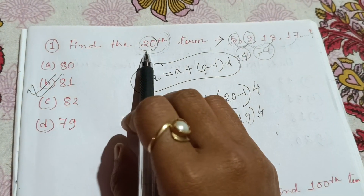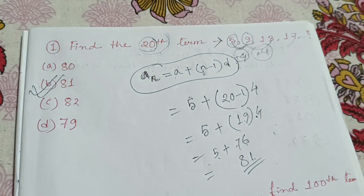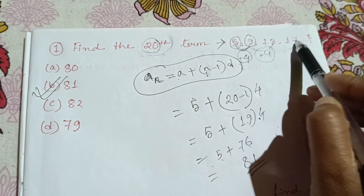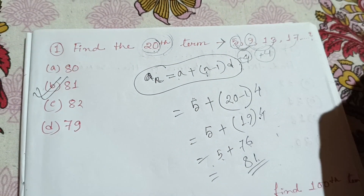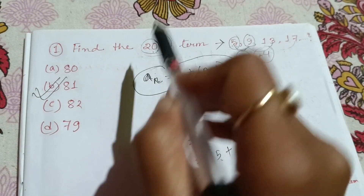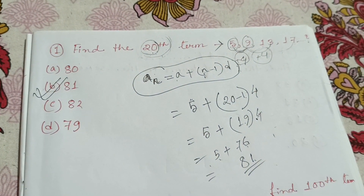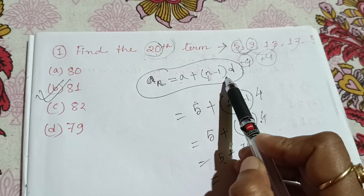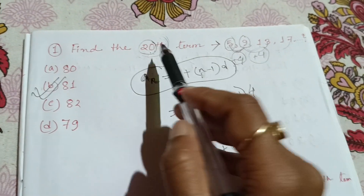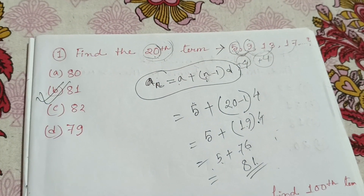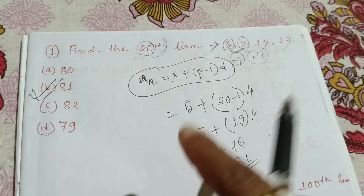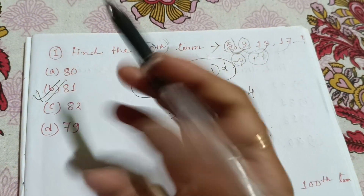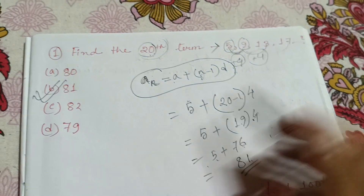So we are going to write D. Just a 1 and a minus, n minus 1 into D. We are going to write D — let's write a D and write it down. We are going to write D minus D.